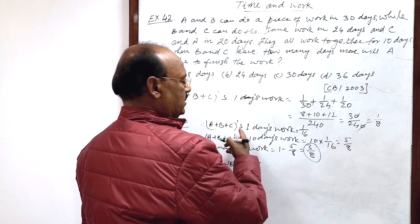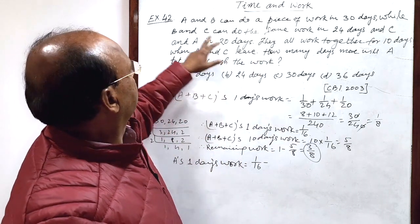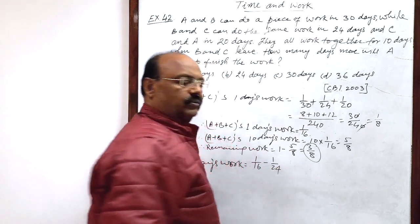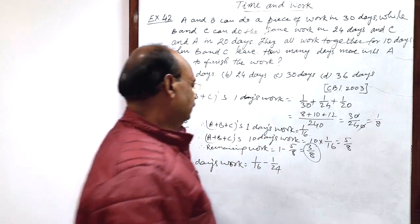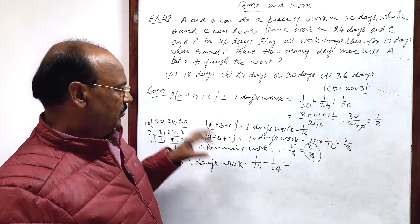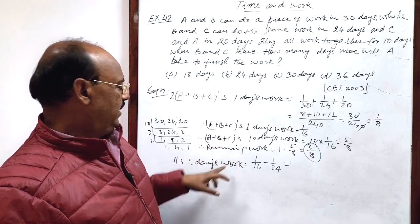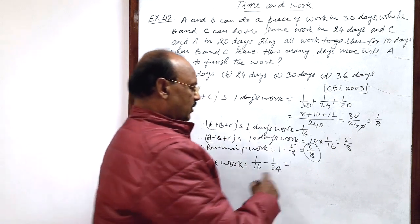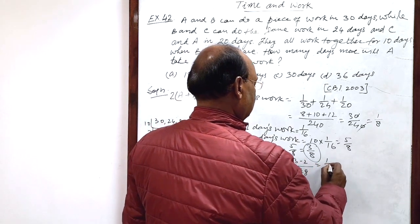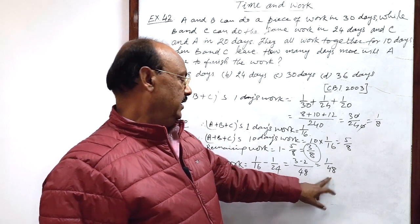A's 1 day's work we can obtain by subtracting B plus C's 1 day work from A plus B plus C's 1 day work. This will be A plus B plus C's 1 day work is 1 by 16 and B plus C's 1 day work will be, B and C do the same in 24 days, so in 1 day 1 by 24. If we subtract B plus C's work from A plus B plus C's work then B and C will be cancelled out, only A will remain. So, this is A's 1 day work. Let us simplify it. Here LCM will be 48, 3 minus 2 this is 1 by 48.